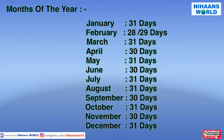Friends, the names of the months and the number of days in each month are: January has 31 days, February has 28 to 29 days, March has 31 days, April has 30 days, May has 31 days, June has 30 days, July has 31 days, August has 31 days, September has 30 days, October has 31 days, November has 30 days, and December has 31 days.